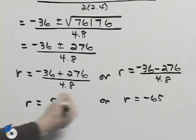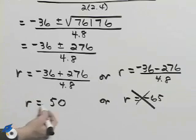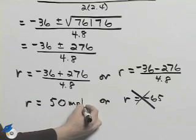Since R is a rate, a rate can't be negative, so we'll cross out that option. So the answer to the problem is R is 50 miles per hour.